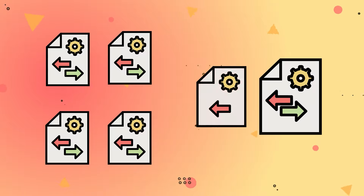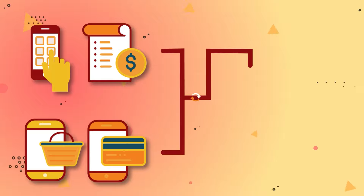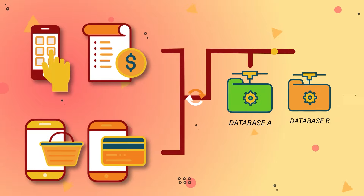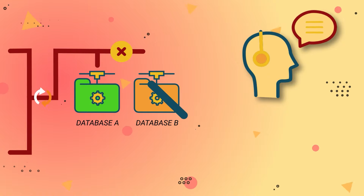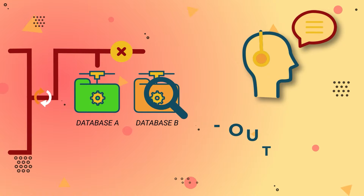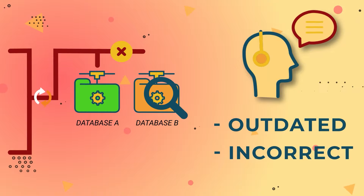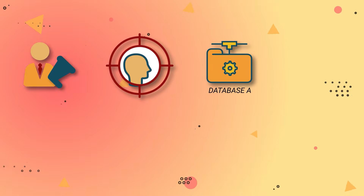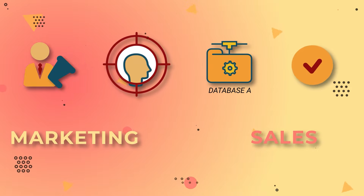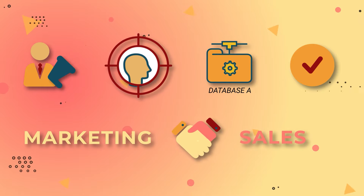You can see how this gets messy. For example, imagine if a customer's phone number, recent purchases, bill statement, and credit card information were newly updated in database A but not in database B. If a salesperson trying to contact and pitch the customer looked at database B, they would be basing their actions off a version that's outdated and incorrect. Now, imagine if a marketing person trying to retarget the customer looked at database A — their actions would be correct, but now the marketing and sales teams are not aligned.